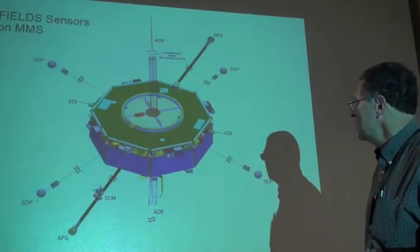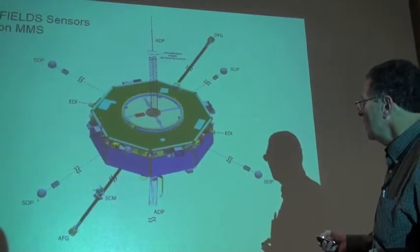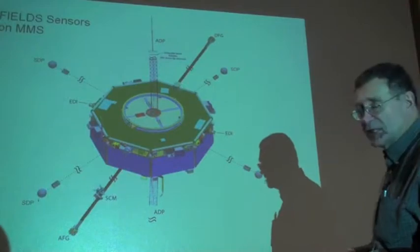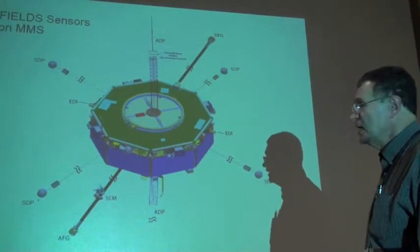It's covered with solar cells around its belly band. It has a collection of booms that extend these sensors out from the spacecraft to get away from spacecraft noise and interference.